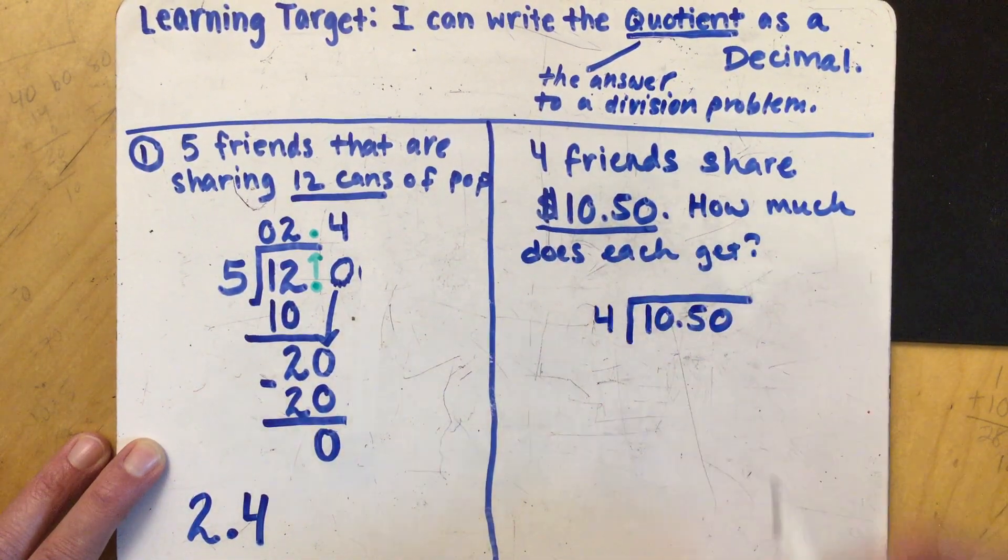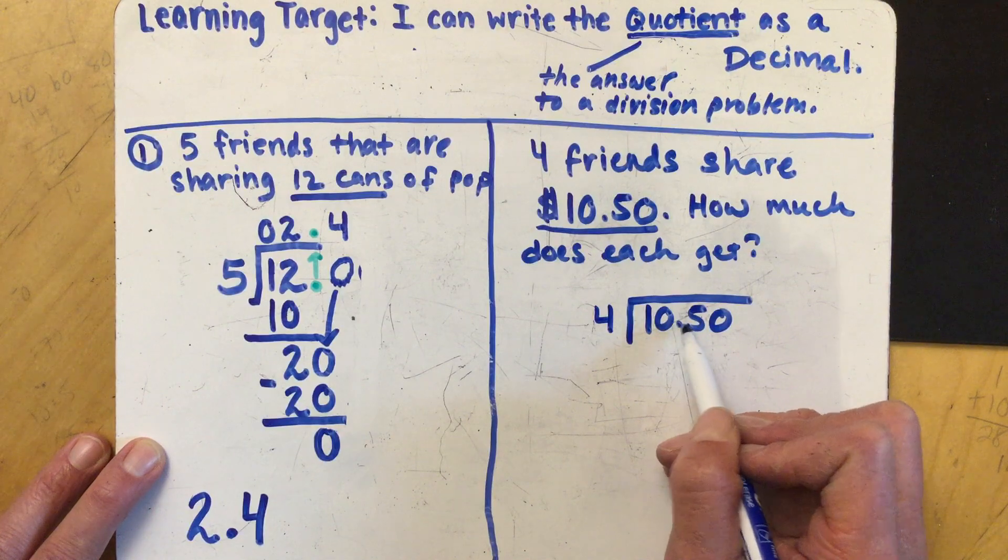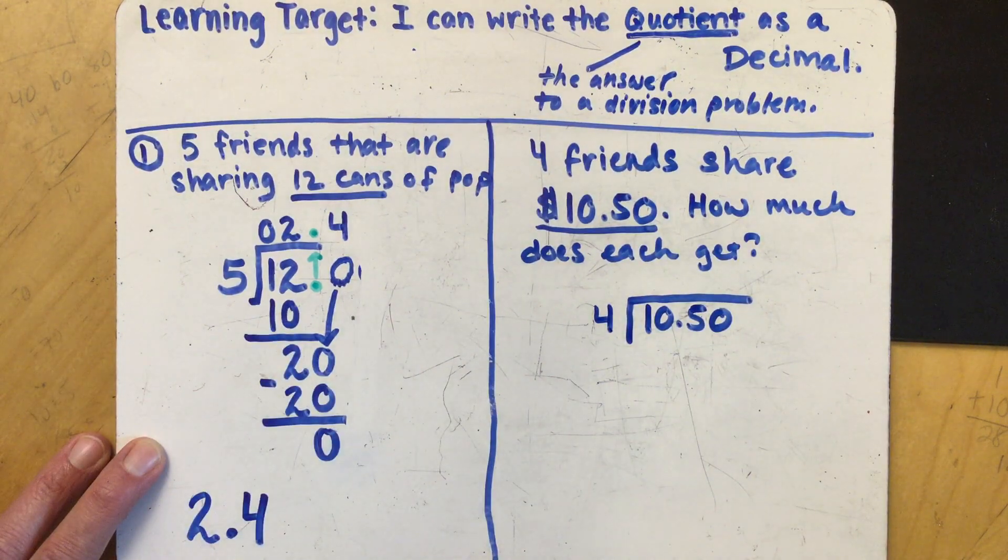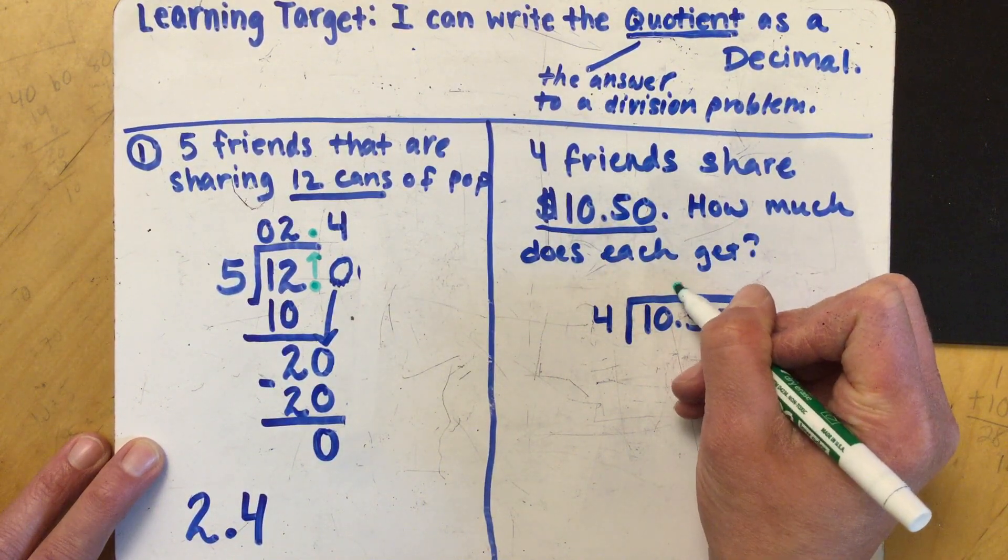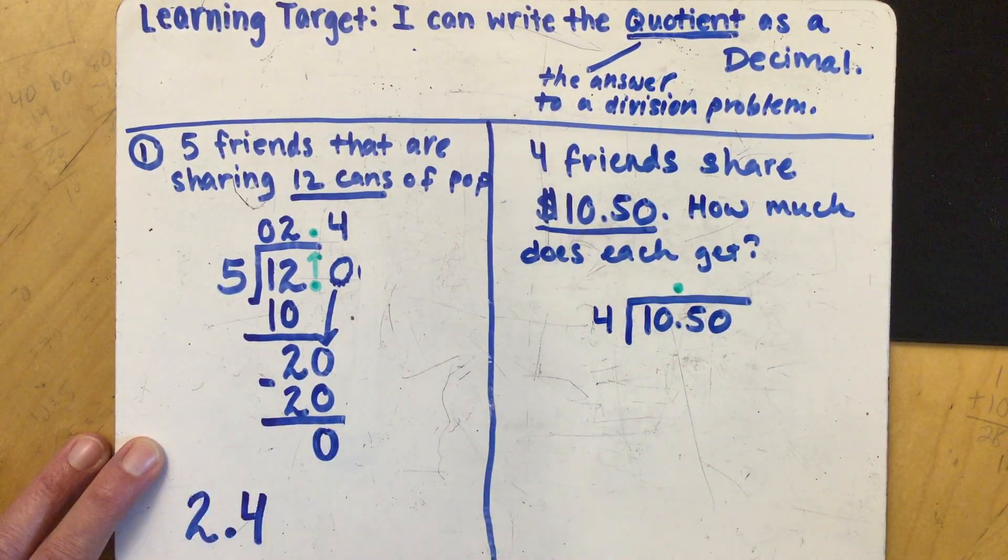So we're splitting this up so this is going to live in the house as our dividend. Divisor goes on the outside. Notice that we already have a decimal in here so if you're comfortable doing this I like to do this right away so I don't forget to do it. I'm gonna bring my decimal points straight up so I don't forget about it in my answer.